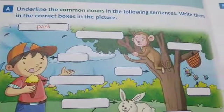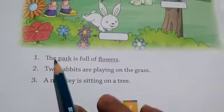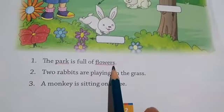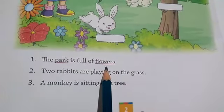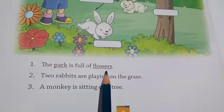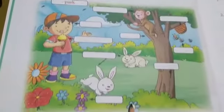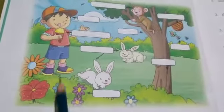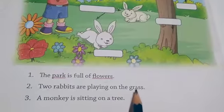Underline the common nouns in the following sentences and write them in the correct boxes. The park is full of flowers — which is the common noun? Park and flowers. Two rabbits are playing on the grass — which is the common noun? Rabbits and grass. You have to write them in the box.